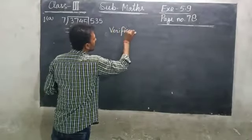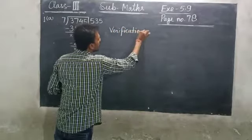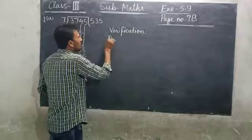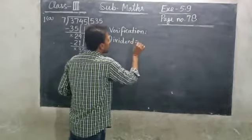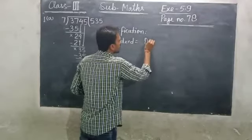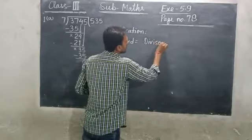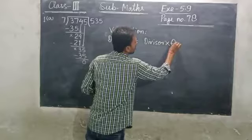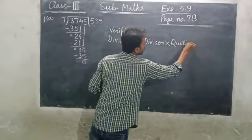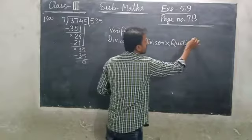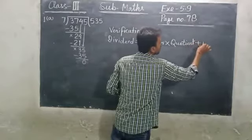Verification. The formula is: dividend equals divisor into quotient plus remainder.